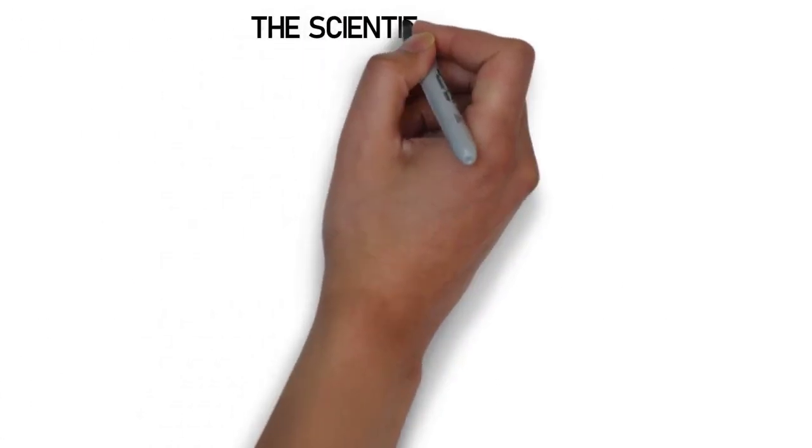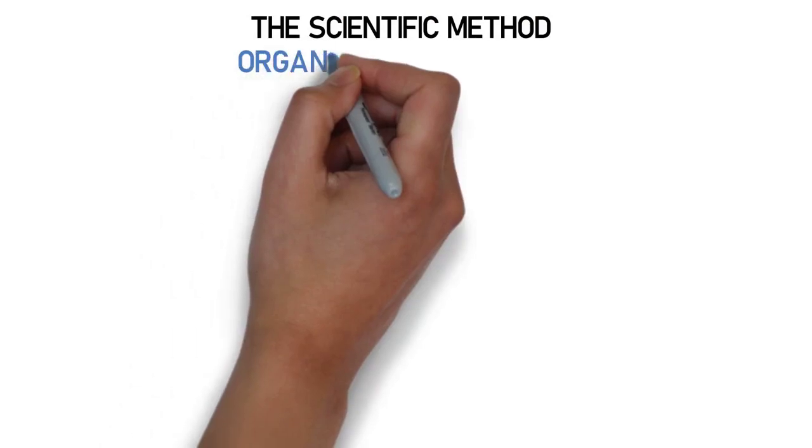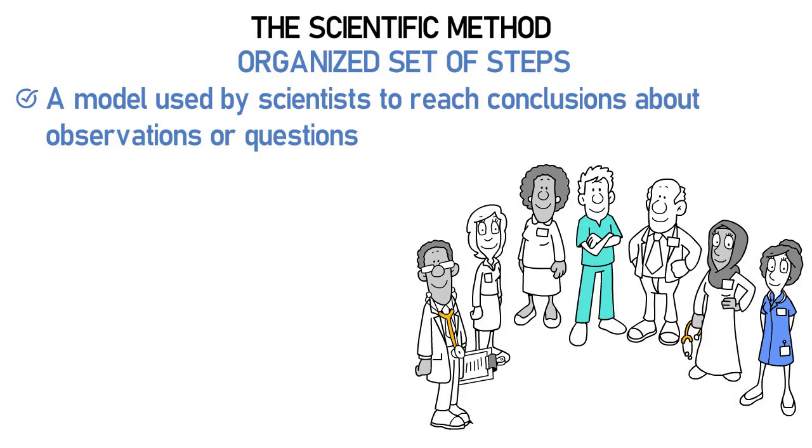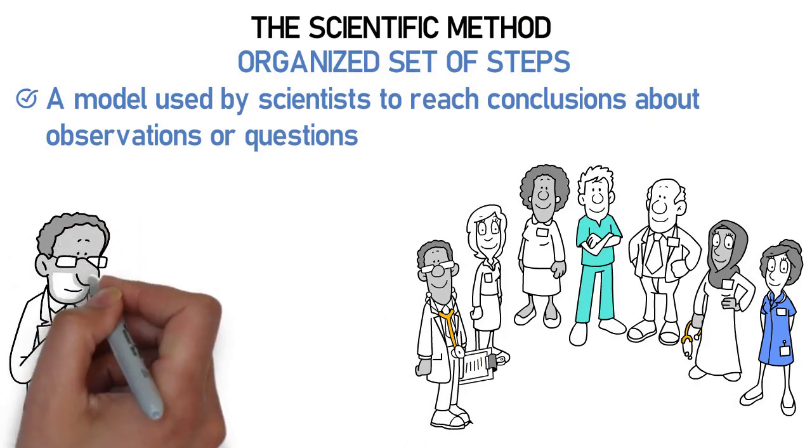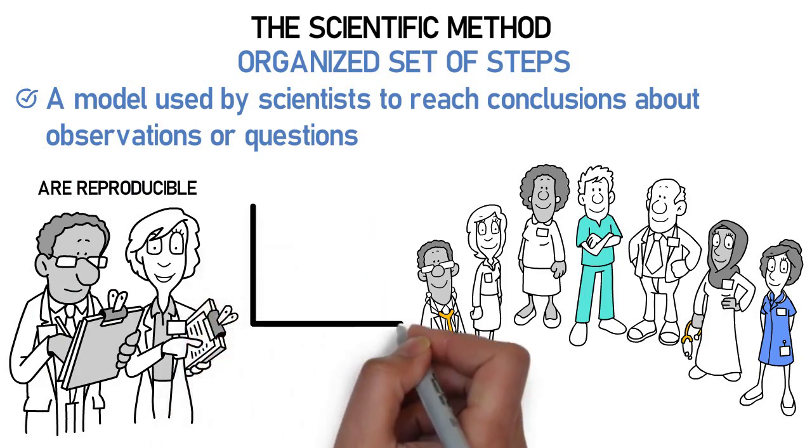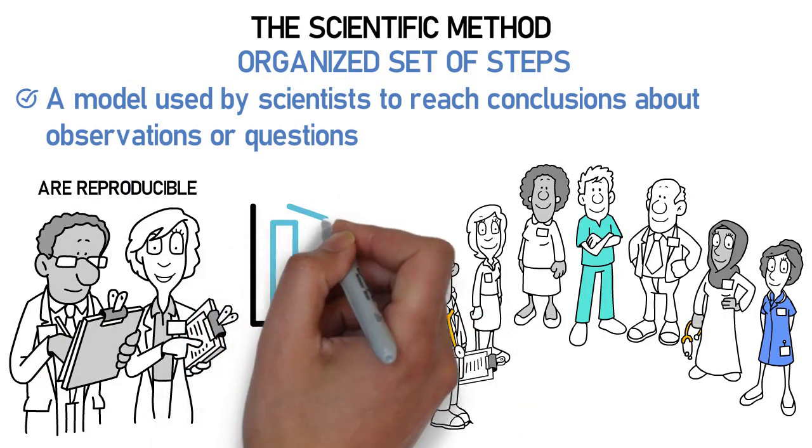The scientific method is nothing more than an organized set of steps used by scientists and non-scientists to reach conclusions. This method ensures that the steps used to prove or disprove a prediction are reproducible and it helps reduce the instances of scientist bias towards their prediction.